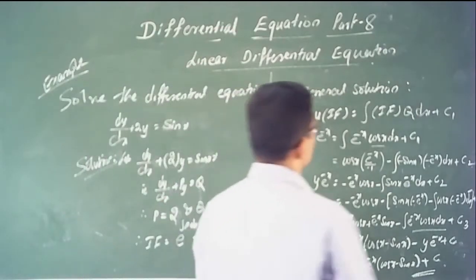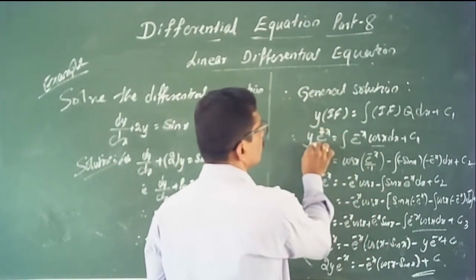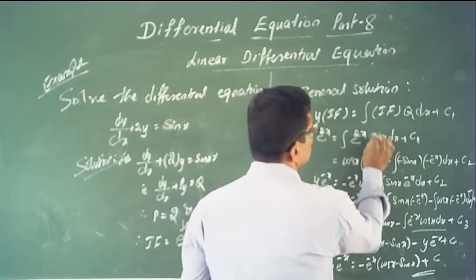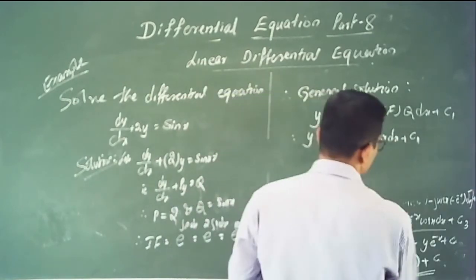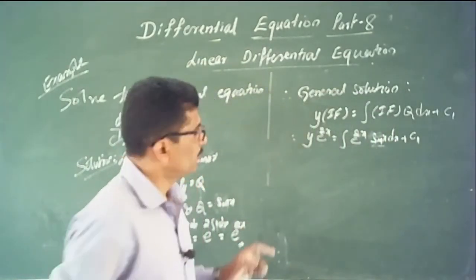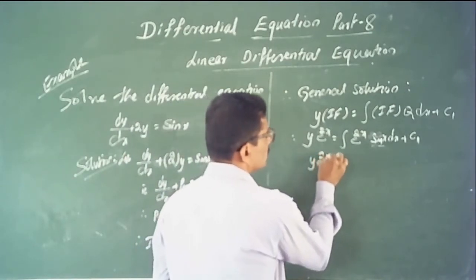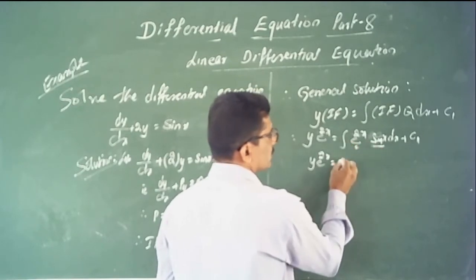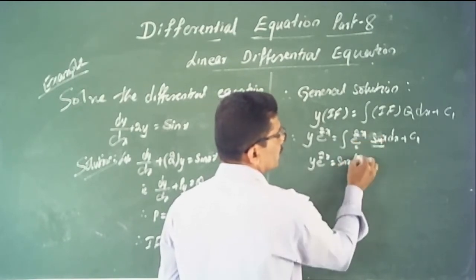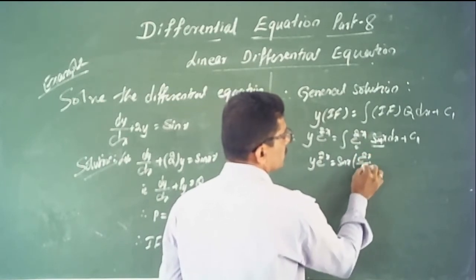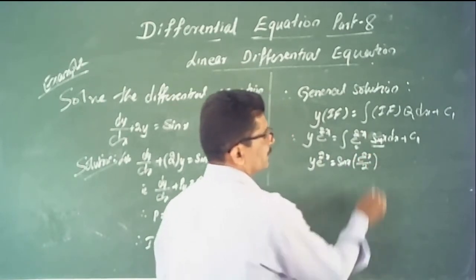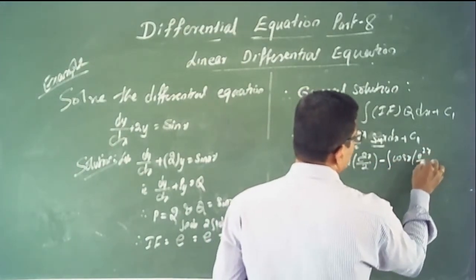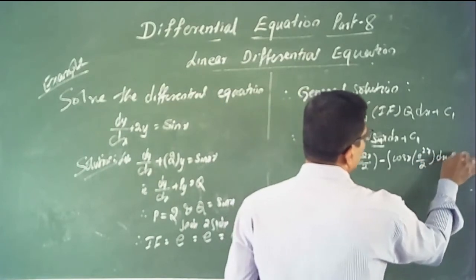The general solution: y·e^(2x) = ∫e^(2x)·sin x dx + C. Integrating by parts — first function is sin x, second is e^(2x). Integration of e^(2x) is e^(2x)/2. So: y·e^(2x) = (e^(2x)/2)·sin x − ∫cos x · (e^(2x)/2) dx + C₂.